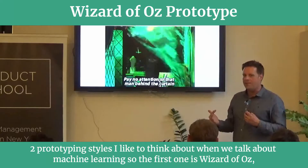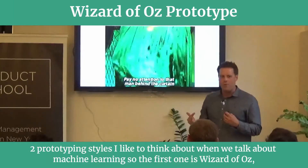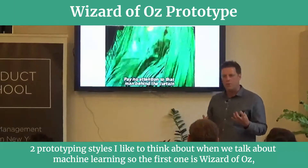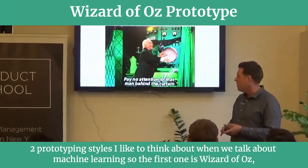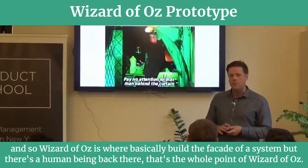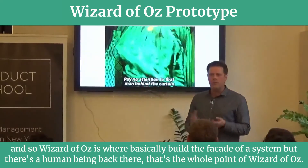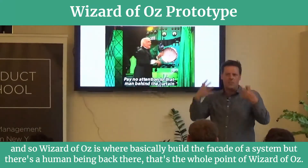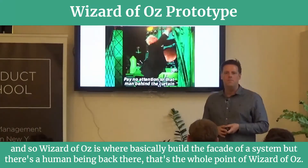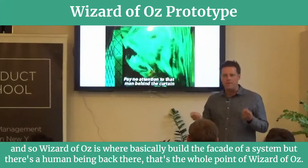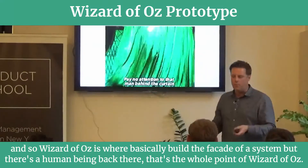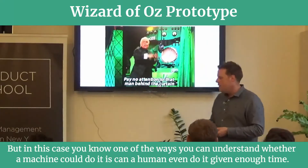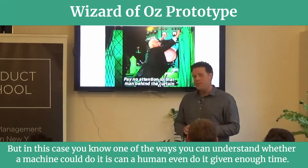There are two prototyping styles I like to think about when we talk about machine learning. The first one is Wizard of Oz. Wizard of Oz is where you basically build the facade of a system, but there's a human being back there. That's the whole point of Wizard of Oz. But in this case,